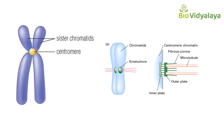In summary, the centromere is the constricted region of the chromosome that holds two sister chromatids together. The kinetochore is a protein complex assembled during pro-metaphase on the centromere, and spindle fibers attach to this kinetochore during cell division. There are three regions in the kinetochore: the inner plate, which directly contacts the centromere; the outer plate, where spindle fibers attach; and the fibrous corona, which acts as a checkpoint for microtubule assembly.